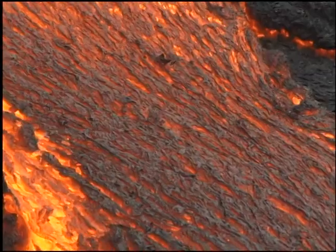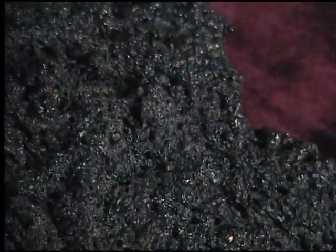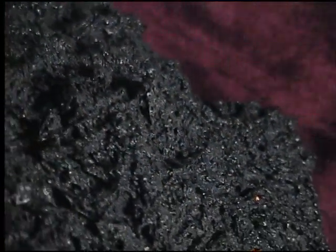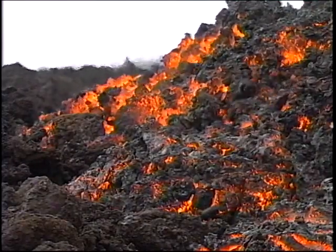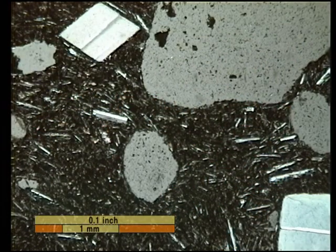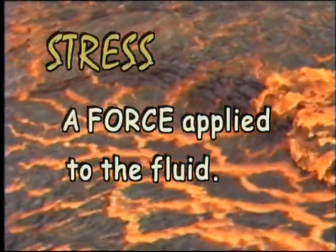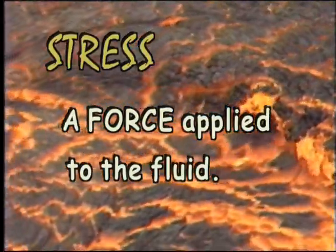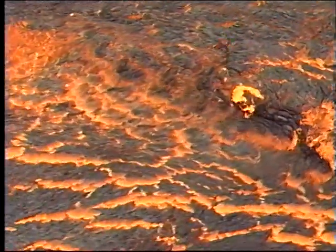Slow-moving crystal-rich lava tends to form spiny pahoehoe crusts. If the lava moves faster, the crystals in the lava collide and bind, causing the crust to tear and A-A to form. The tearing force, called shear stress, plays an important role in determining whether A-A or pahoehoe crust forms.